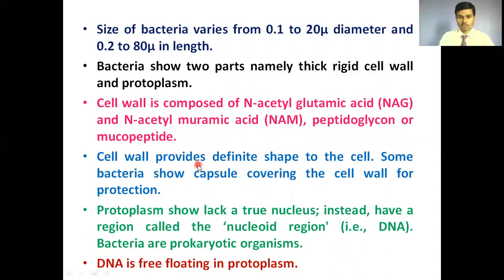The function of the cell wall is to provide a definite shape to the bacterial cell. As we have seen, the different shapes of bacterial cells are primarily due to the cell wall. Some bacteria show a capsule that covers the bacterial cell wall; this capsule does not allow the bacterial cell to dry out or desiccate.